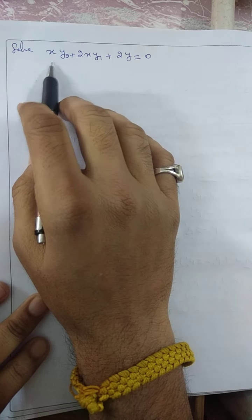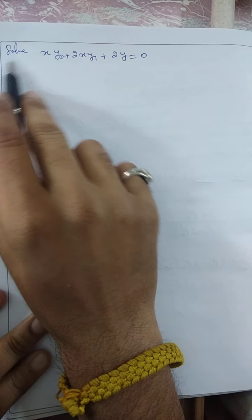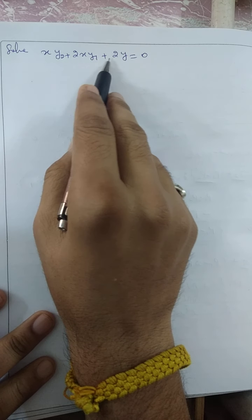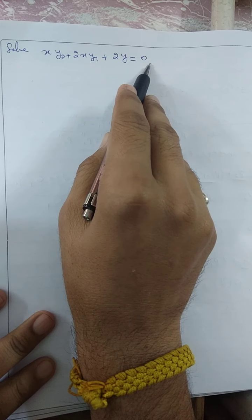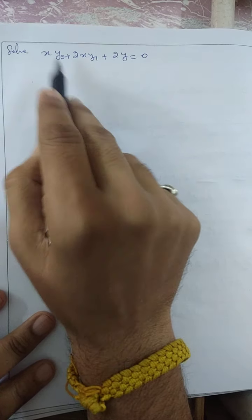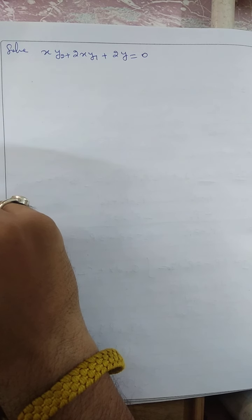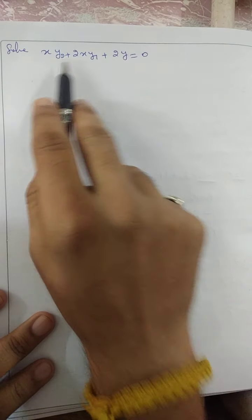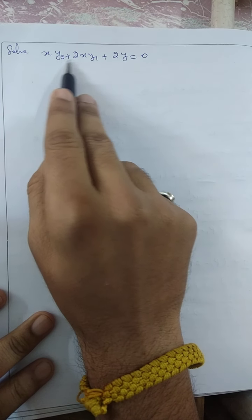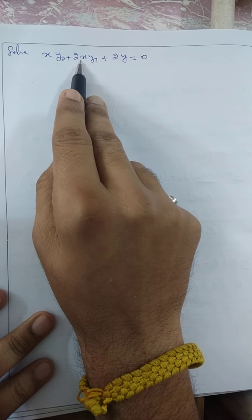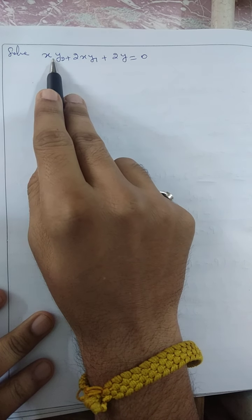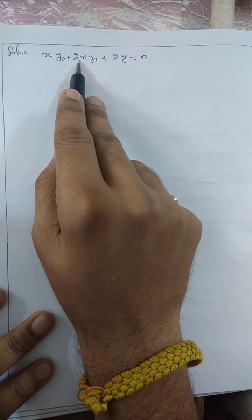We have to solve the differential equation x·y'' + 2x·y' + 2y = 0. This is a linear differential equation with variable coefficients — it is neither Cauchy's linear differential equation nor Legendre's linear differential equation.